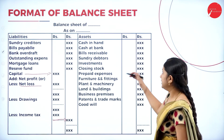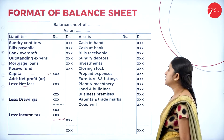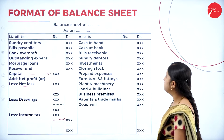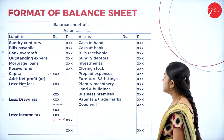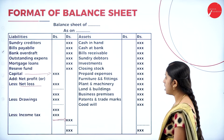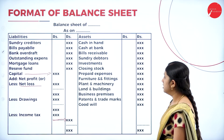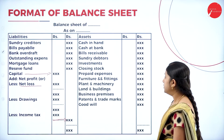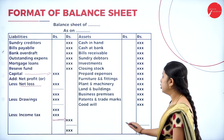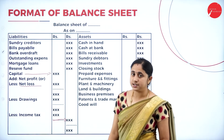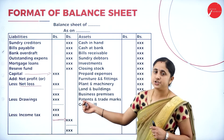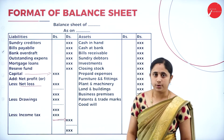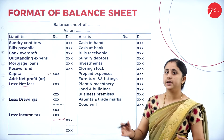Assets include cash in hand, cash at bank, bills receivable, sundry debtors, investments, closing stock, prepaid expenses, furniture and fittings, plant and machinery, land and building, business premises, patents and trademark, and goodwill. The balance sheet should be tallied — assets and liabilities must be equal. If you get the same amount on both sides, your problem is correct.